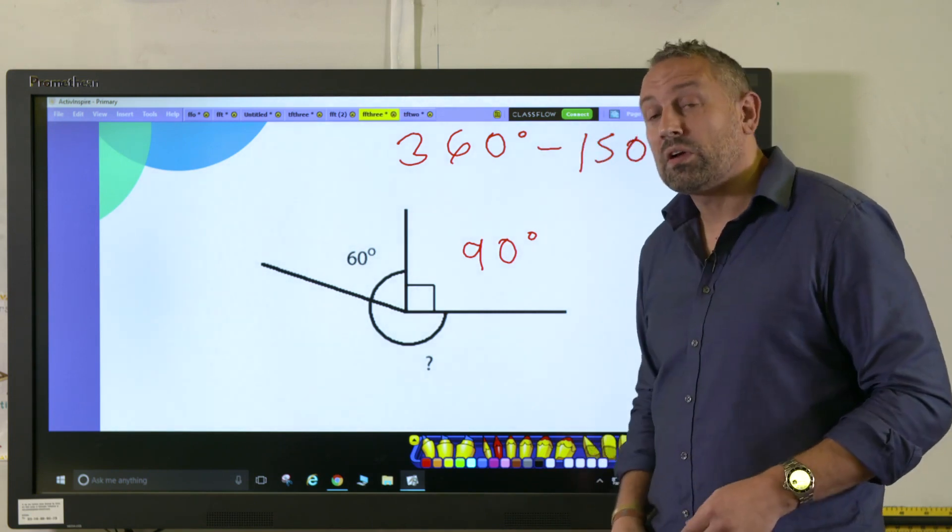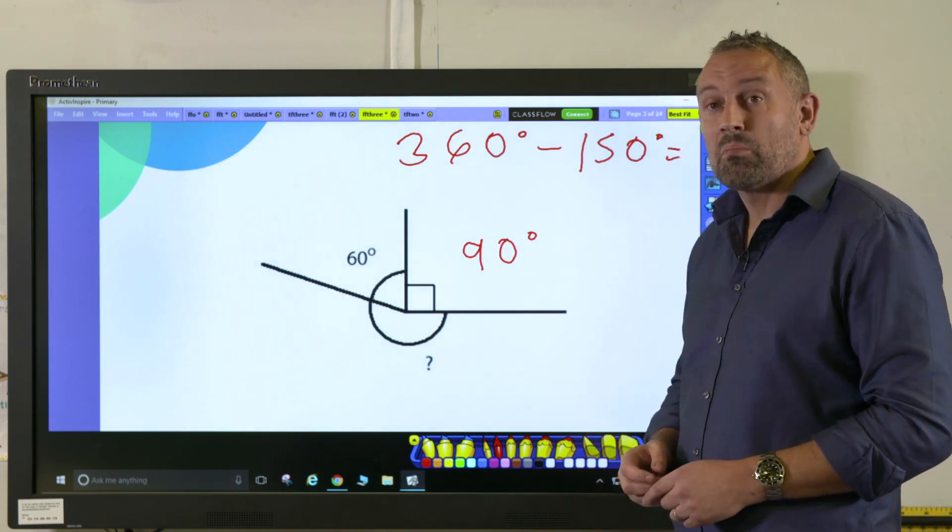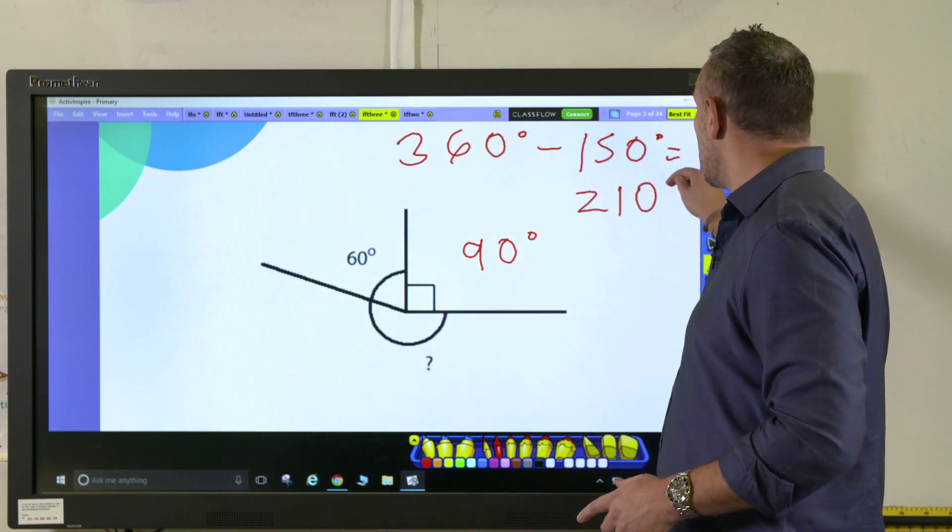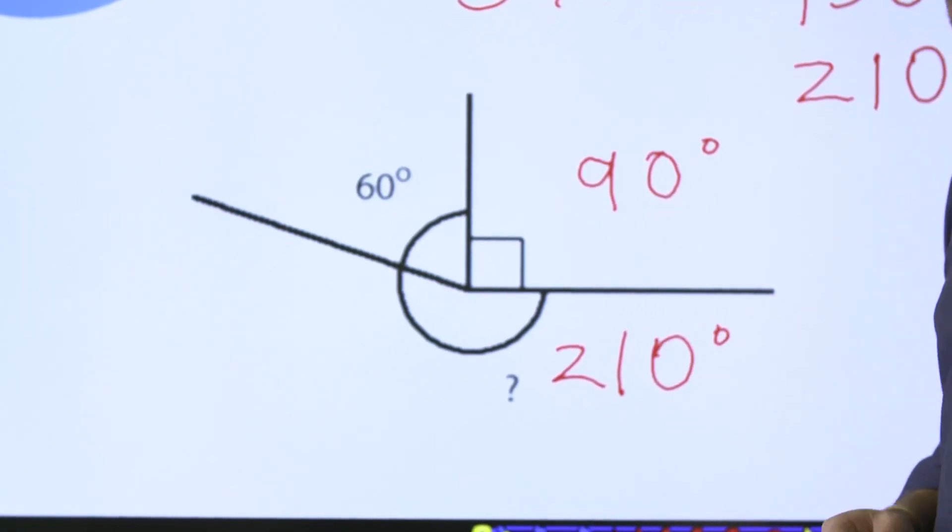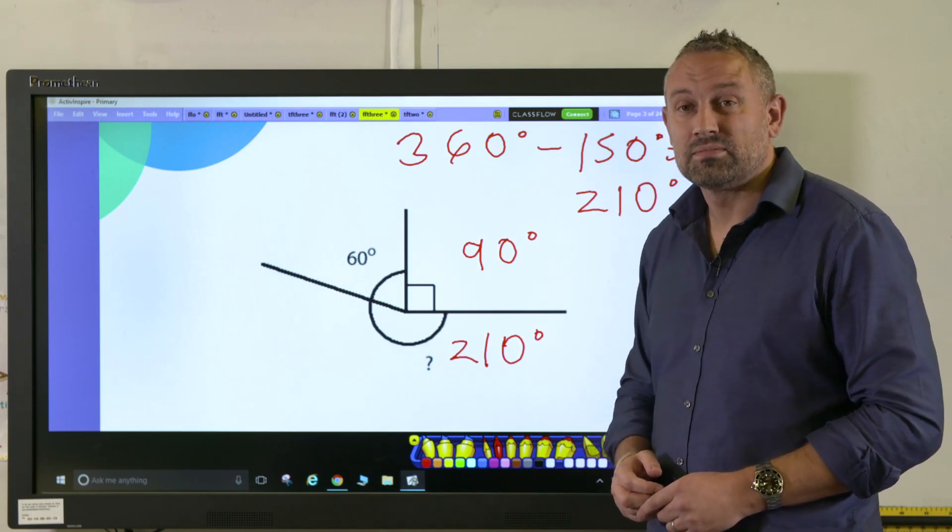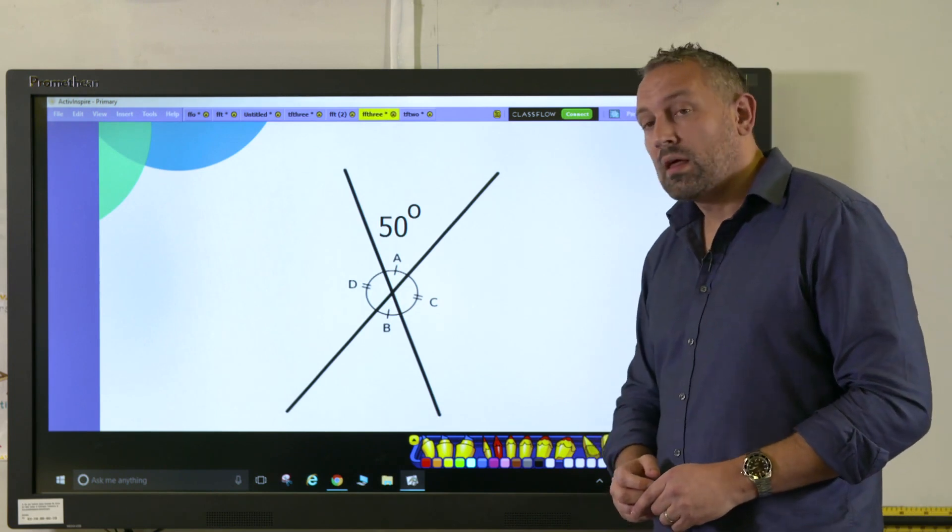What's really useful is if the children have got that good understanding of the size of angles. When they do 360 minus 150 to get 210, which is this angle here, they will realize that that's a reflex angle and that fits. That's where that good understanding of angle names comes in.